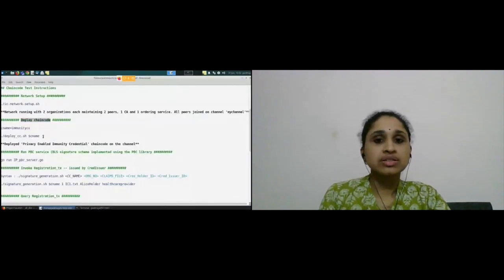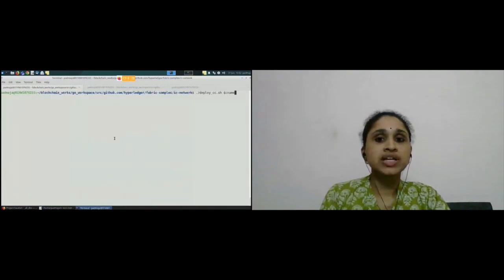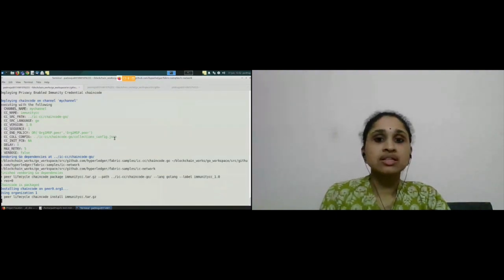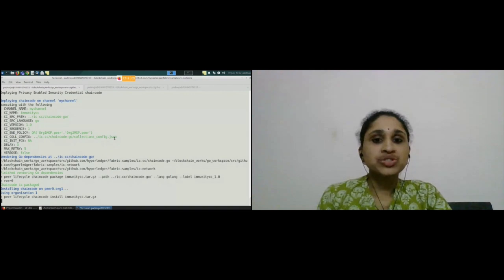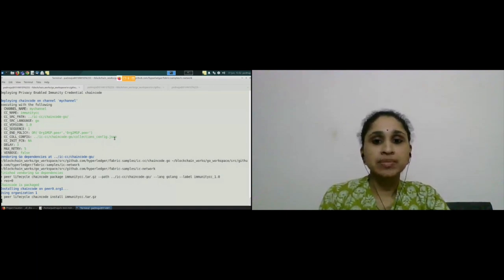Next is the chain code deployment phase. As we all know, chain code is similar to a smart contract that encapsulates business logic. This logic is agreed by all members of the network. A chain code can be invoked to update or query the ledger. In this phase, chain code is being installed on all the peers. From each chain code, PBC code is called for performing BLS functions. As I already mentioned, we are implementing BLS-based functions using pairing-based crypto library.